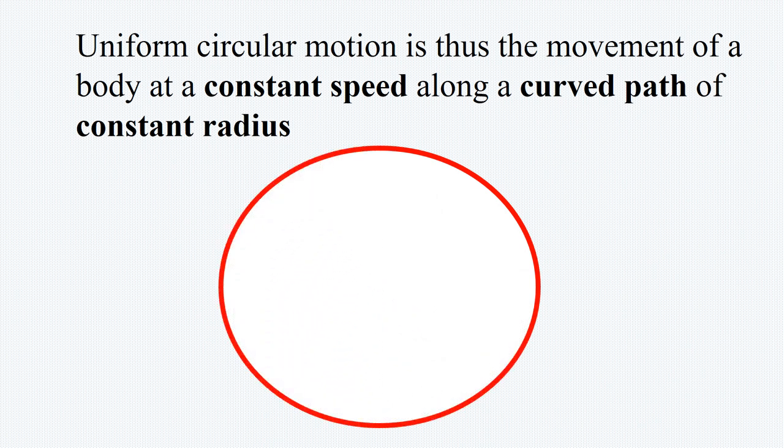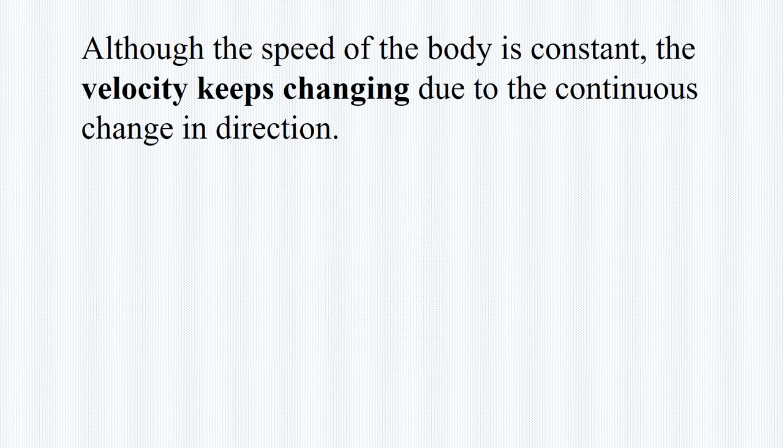That shows us a circle of constant radius. If a body is moving round that circle, that body is said to exhibit uniform circular motion. Although the speed of the body is constant, the velocity keeps changing due to the continuous change in direction. This is as shown in the diagram below.